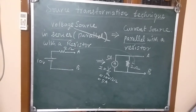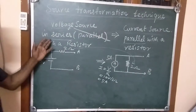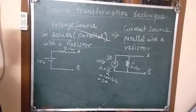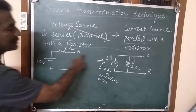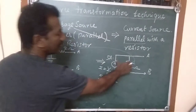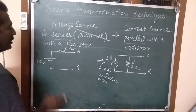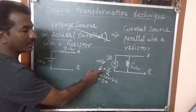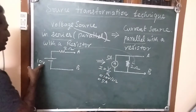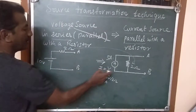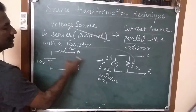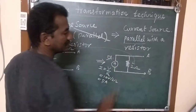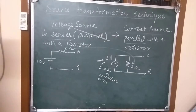So this is the method to convert a voltage source in series with a resistance into a current source parallel with a resistance. The value of the resistance remains the same but it becomes parallel. The value of the current source is found using I = V/R: 10 divided by 2 gives 5 amperes, and the resistance remains 2 ohms.